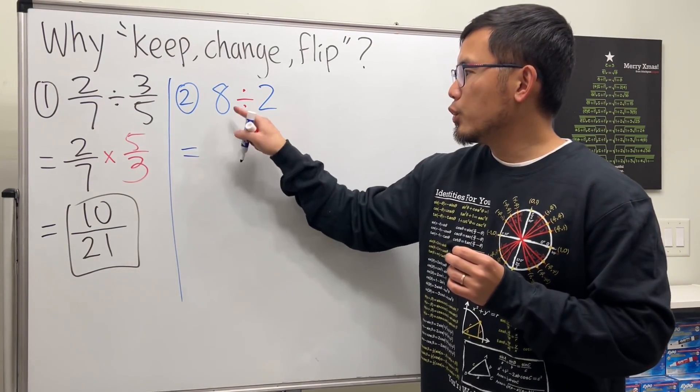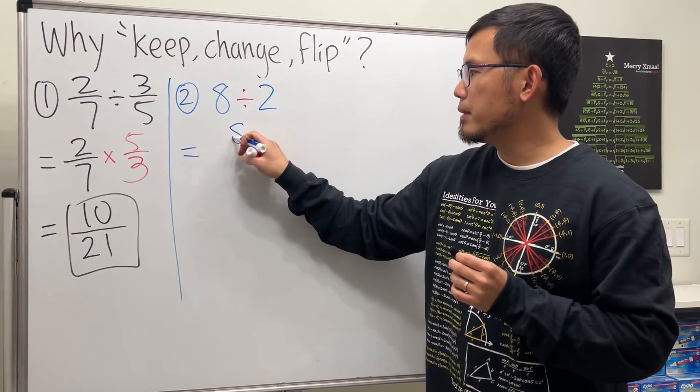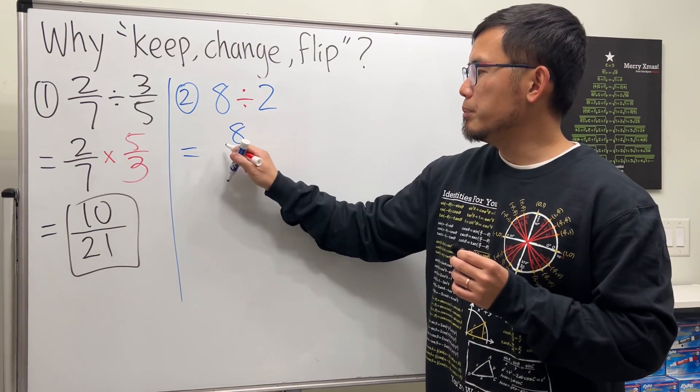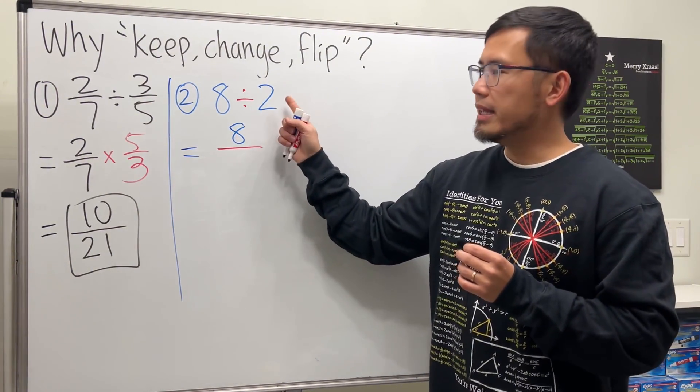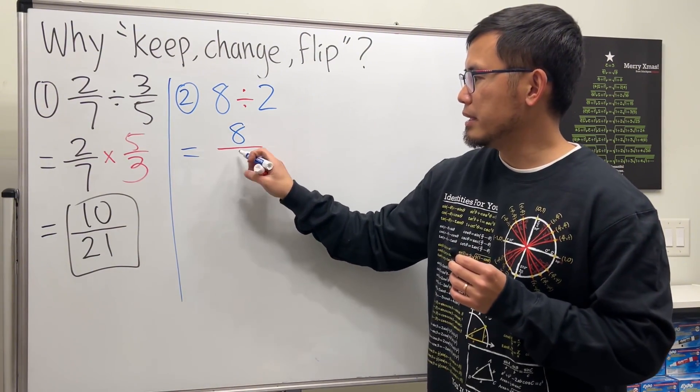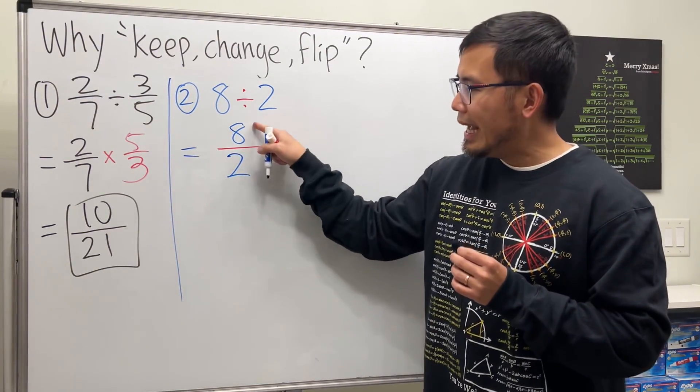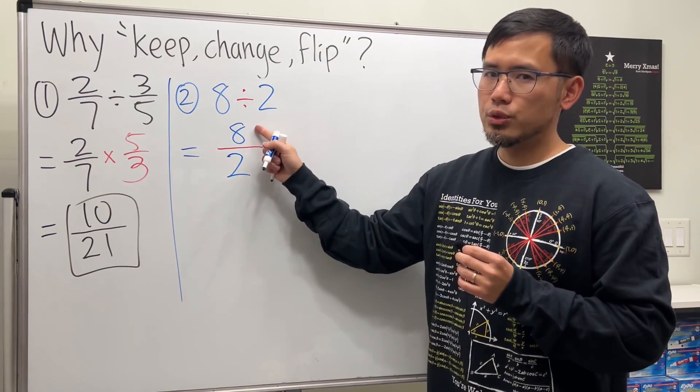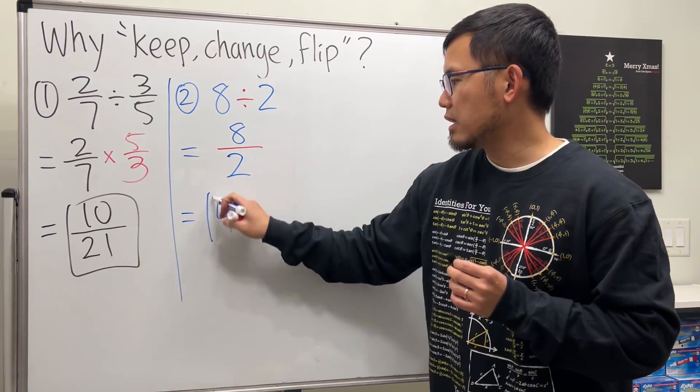And to do so, we keep the first number on the top. The division symbol becomes the fraction bar. And then the second number goes on the bottom, like this. 8 over 2. 2 goes into 8 four times. And that's the answer. Done.